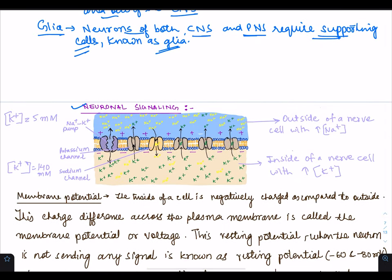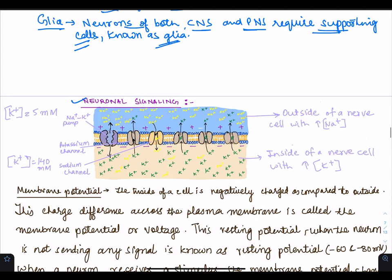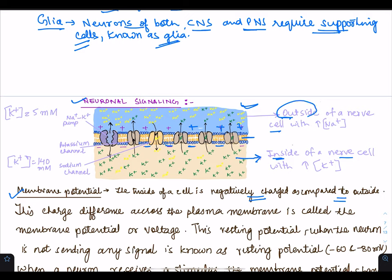Now let us study how neuronal signaling occurs — how the signal is going to occur in a neuron. This diagram shows the membrane of a neuron cell: this is the outside of a nerve cell and this part is the inside. First of all, we should understand what is membrane potential. The inside of a cell is negatively charged as compared to the outside — the inside is negative and the outside is positively charged. This charge difference across the plasma membrane is called the membrane potential or voltage.